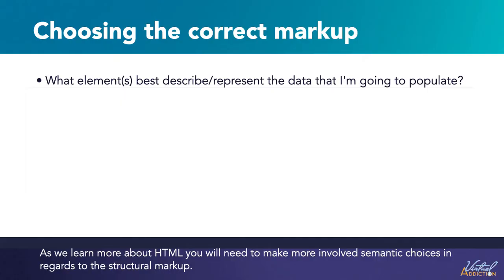When approaching which markup to use, ask yourself: what element best describes or represents the data that I'm going to populate? For example, is it a list of data? Is it ordered or unordered? As we learn more about HTML, you'll need to make more involved semantic choices in regards to the structural markup. It's really up to you to decide what the elements involved represent. As long as the hierarchy makes sense, you just need to bear in mind a few additional best practices to create your semantic structure.